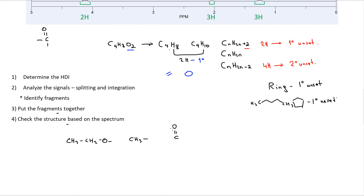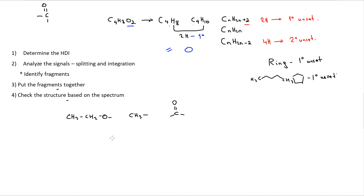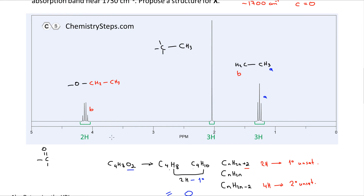Now let's put the fragments together. We have a carbonyl group, and let's count the hydrogens: five protons from the ethyl group plus three from the singlet CH3 gives eight total, which matches the molecular formula C4H8O2. We also account for all four carbons. One possibility is: connect CH3 to a carbonyl, then attach the oxygen-bearing CH2 block with the ethyl group — giving CH3-C(=O)-O-CH2-CH3.